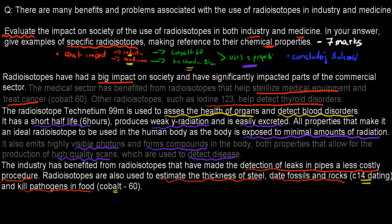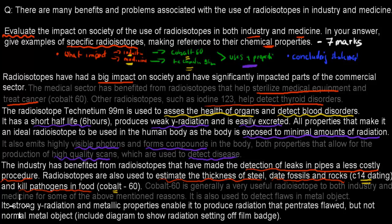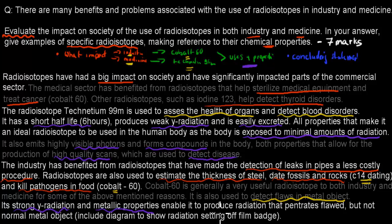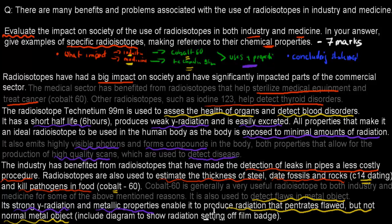Then we go into the specific example: cobalt-60, relating its properties to its use. Cobalt-60 is generally a very useful radioisotope to both industry and medicine for the reasons mentioned. It's also used to detect flaws in metal objects. Its strong gamma radiation and metallic properties enable it to produce radiation that penetrates flawed but not normal objects. I've connected the properties to why it's used to detect flawed metal objects. There's also a diagram you could draw showing the radiation setting off the film badge if an object is flawed.